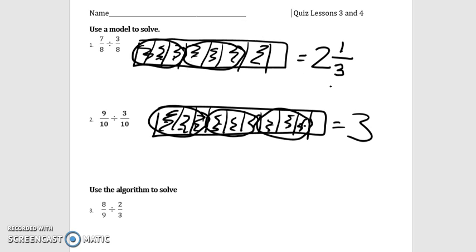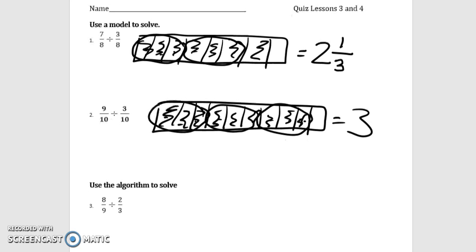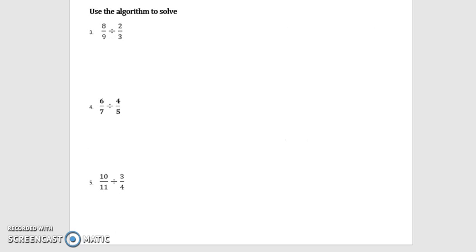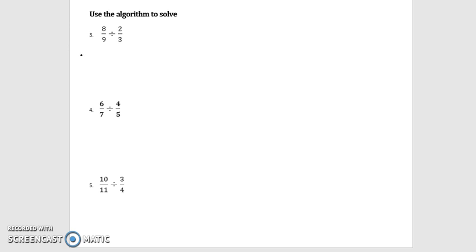All right. Let's take a peek at down below here, which is your algorithm technique. So this is making sure we are rewriting it. When we solve using the algorithm, we leave the first fraction alone. The division sign becomes a multiplication sign, and we take the reciprocal, which means to flip that second number.